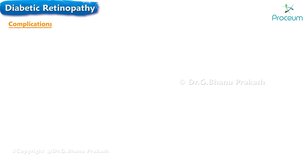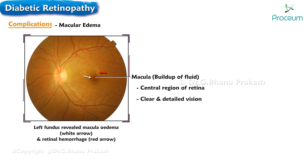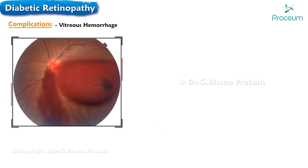Lastly, let's cover the complications. Macular edema refers to the buildup of fluid in the macula, the central region of the retina responsible for clear and detailed vision. This complication is commonly observed in diabetic retinopathy, especially in non-proliferative cases. The presence of macular edema can lead to blurry or distorted central vision, significantly impacting visual function.